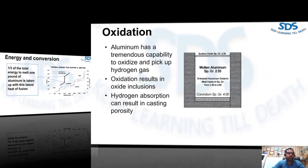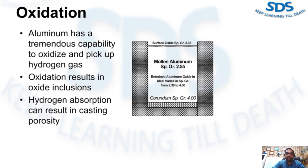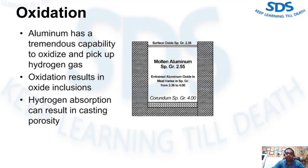Aluminum has a tremendous capability to oxidize and pick up hydrogen gas. Oxidization results in oxide inclusions and hydrogen absorption can result in casting porosity. As shown in the figure, oxidization of the aluminum melt increases appreciably as the melt temperature increases. The melt temperature and correspondingly the furnace temperature should be kept as low as possible to avoid undue oxidation and gas pickup.